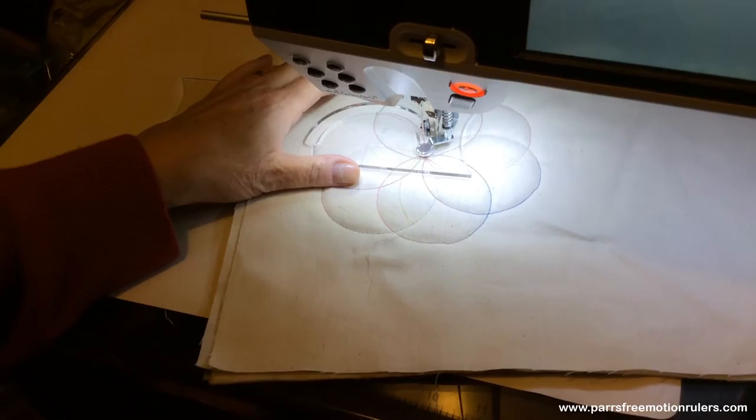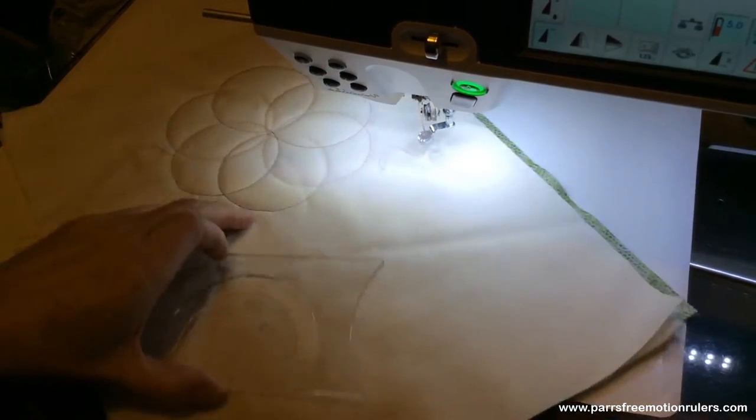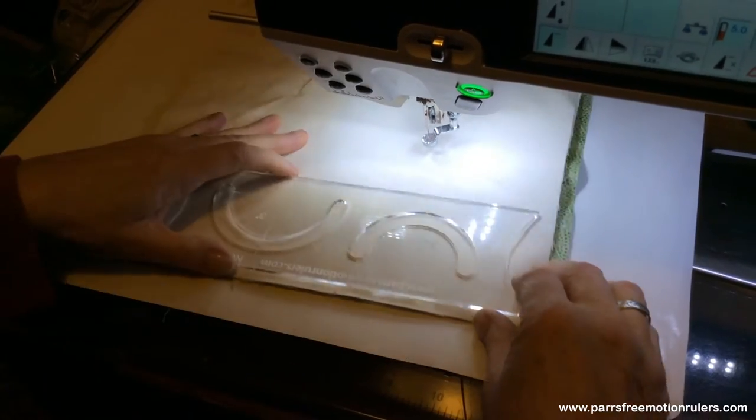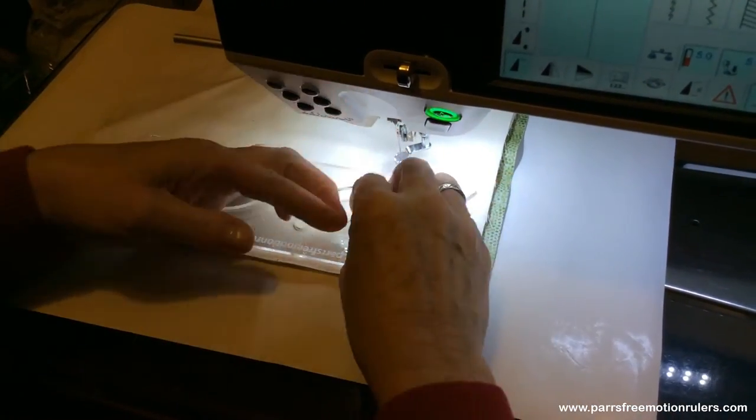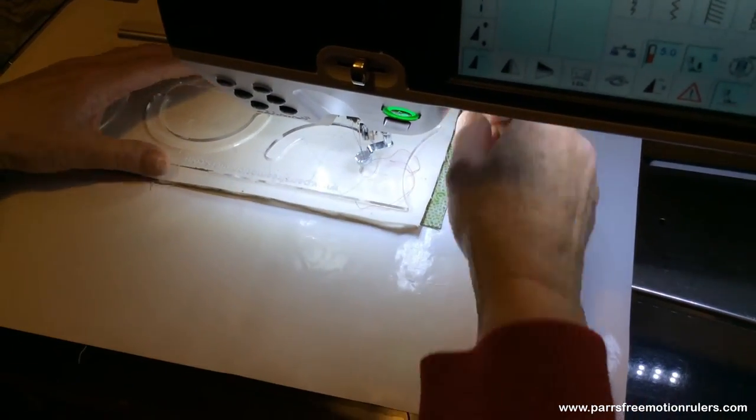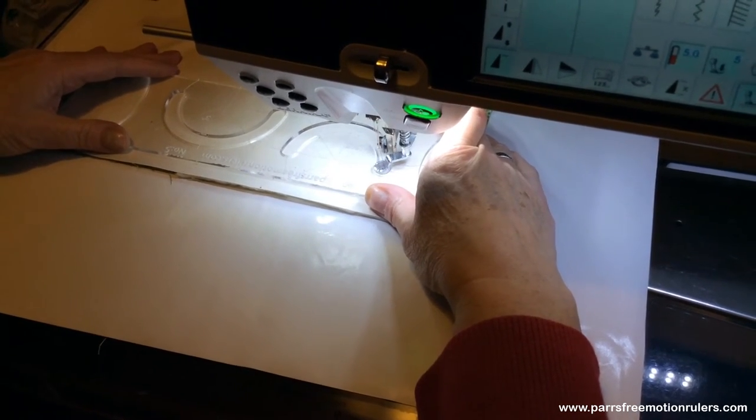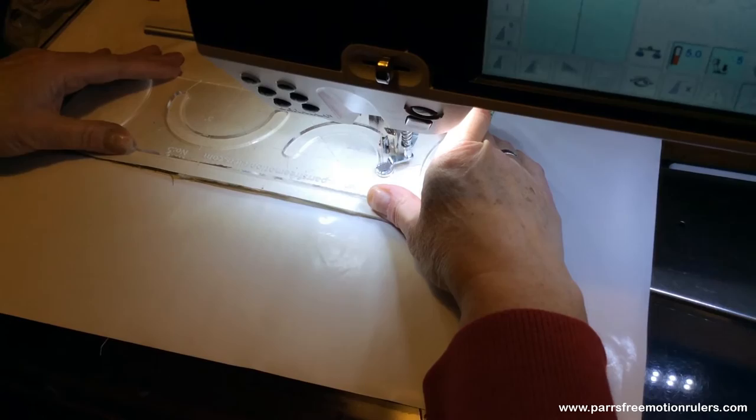What we can do with the number five ruler also is the clamshell. You've got two sizes on this ruler, two and a half and three inch, and I'll use the two and a half to do the clamshell. What we're going to do is a straight line across of half circles.